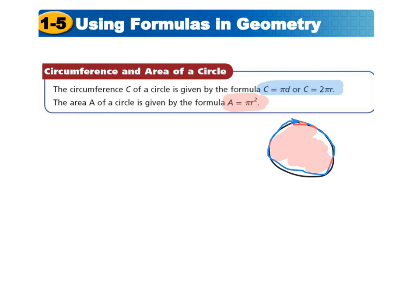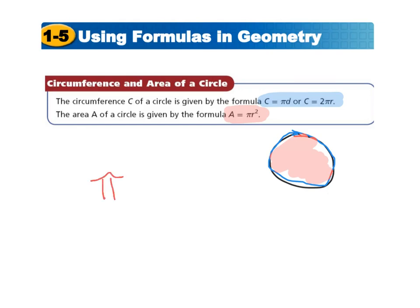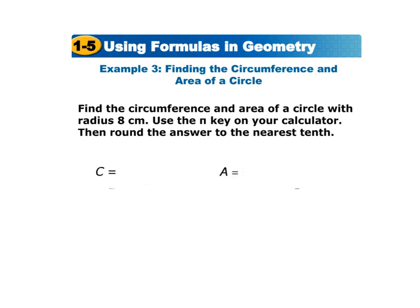Pi represents the ratio of a circle's circumference to its diameter, represented by the Greek letter pi. Pi is often approximated as 3.14 or as the fraction 22 over 7. In these examples we're not going to use a calculator, so we'll just leave pi as the pi symbol.